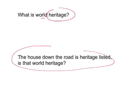One of the questions that comes up a lot is something like this. People and students will often say, 'There's that house down the road that's heritage listed, or our house is heritage listed — is that world heritage?' It's really important to know that in Australia we've got a range of different heritage listings, but unless that house down the road is the Opera House, it's probably unlikely to be world heritage listed.